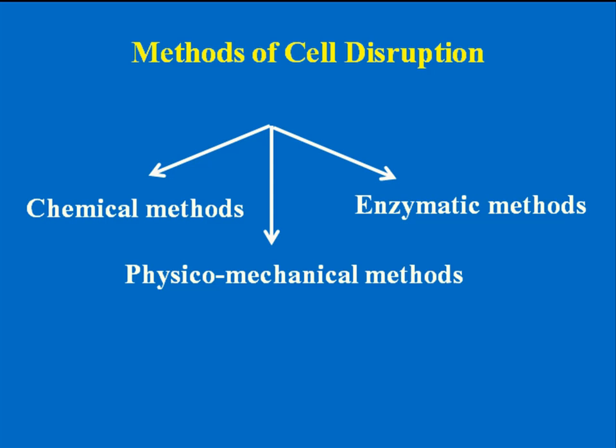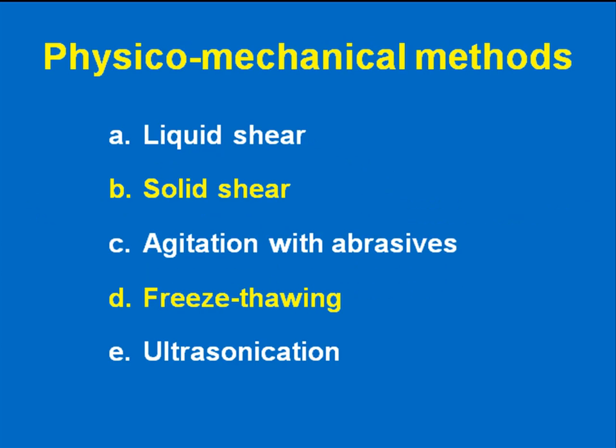Cell disruption methods are mainly divided into three categories: chemical methods, physico-mechanical methods, and enzymatic methods. In physico-mechanical methods, we have a number of different approaches, including liquid shear, solid shear, agitation with abrasives, freeze-thawing, and ultrasonication.